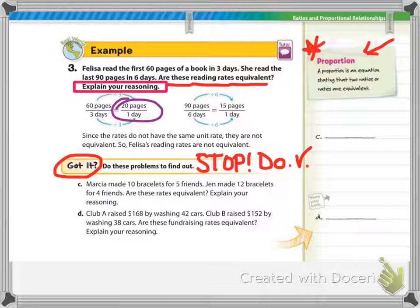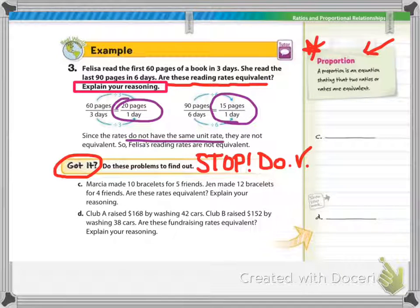And 90 pages in 6 days simplifies to 15 pages per day. In this case, they do not have the same unit rate, so they are not equivalent. So her reading rates are not equivalent.